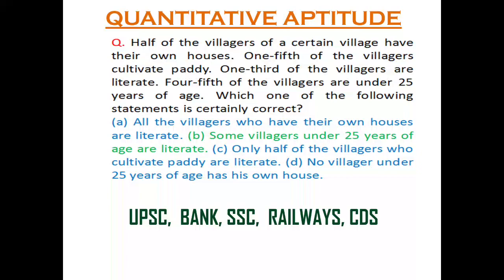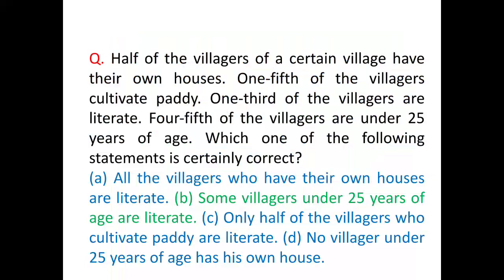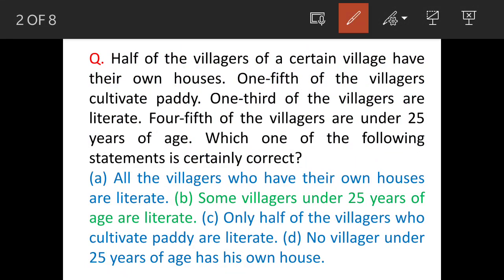We will see a question of quantitative aptitude. Half of the villagers of a certain village have got their own houses. One-fifth of the villagers cultivate paddy. One-third of the villagers are literate. And four-fifths of the villagers are under 25 years of age. Which of the following statements is correct? Statement B: some villagers under 25 years of age are literate, is the correct statement.